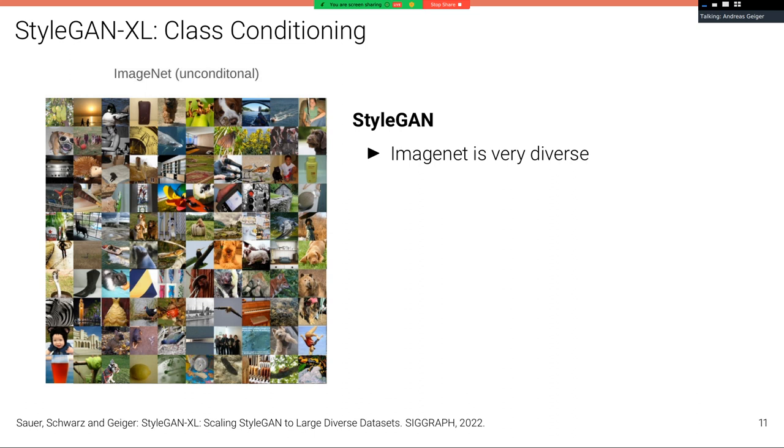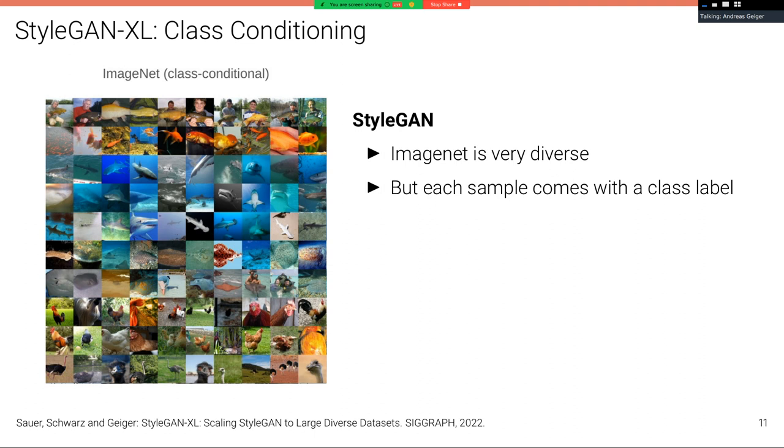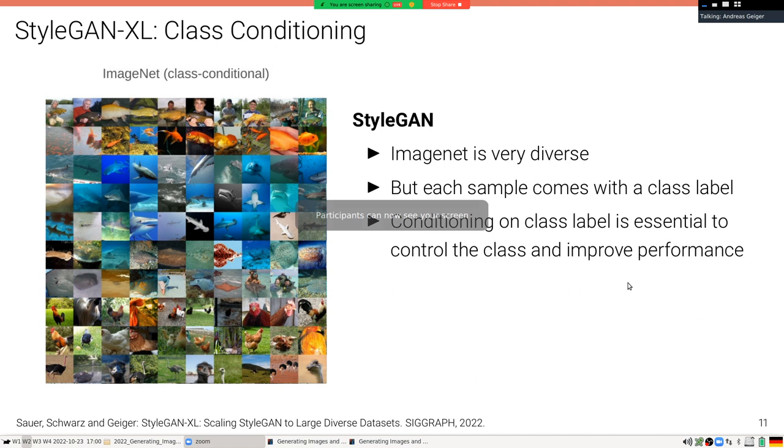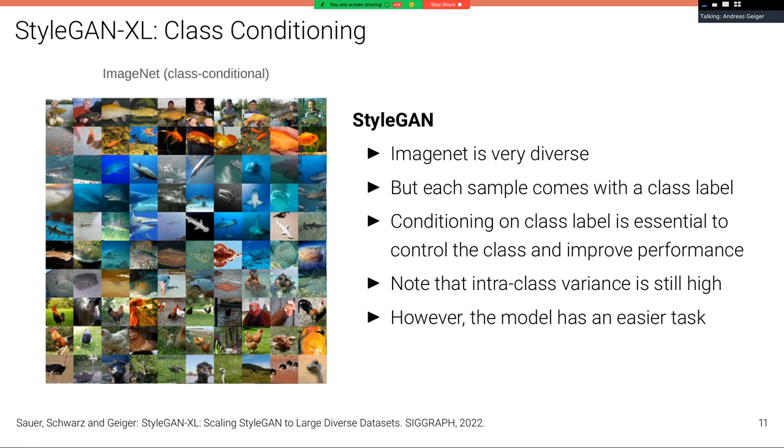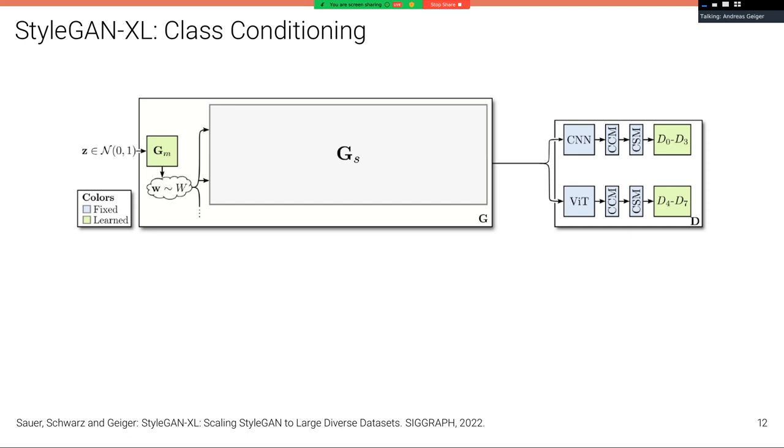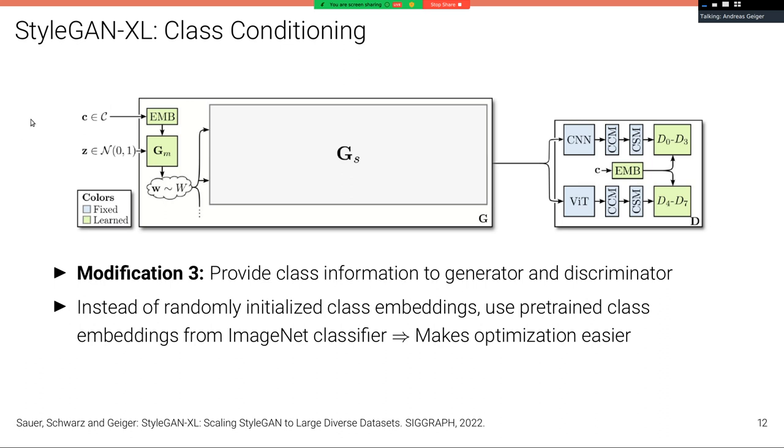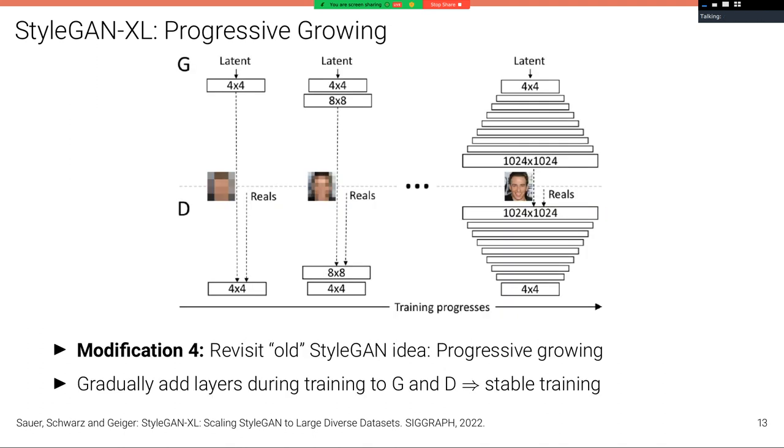The second thing we introduce is class conditioning. ImageNet is very diverse, but each sample comes with a class label. Conditioning on the class label is essential to control the class and improve performance. Despite the class conditioning, note that the intraclass variation is still high. So it's still a challenging task, but it makes the modeling task much easier to have this class conditioning. How do we do this? Here's the picture from before, and so what we do as the third modification is add this class conditioning here. But instead of randomly initializing the class embeddings, we use pre-trained class embeddings from an ImageNet classifier, which also makes optimization easier. So we first have a standard ImageNet model that produces these embeddings, and this is what we initialize to learn these embeddings jointly, and we have this both for the generator and for the discriminator.